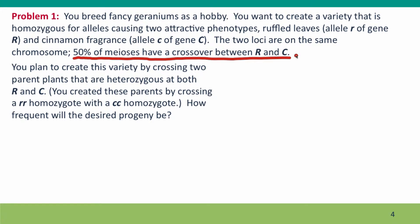Your plan is to create this variety by crossing two parent plants that are both heterozygous at the R and C loci. You're told that you made these parents by crossing an rr homozygote with a cc homozygote. You have to calculate how frequent will the desired progeny, homozygous for little r and homozygous for little c, be among all the other offspring.